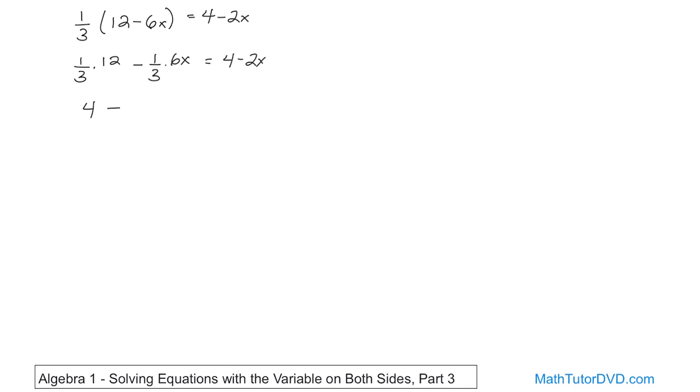6 divided by 3 is 2, so it's going to be 2x, like this, is equal to 4 - 2x.